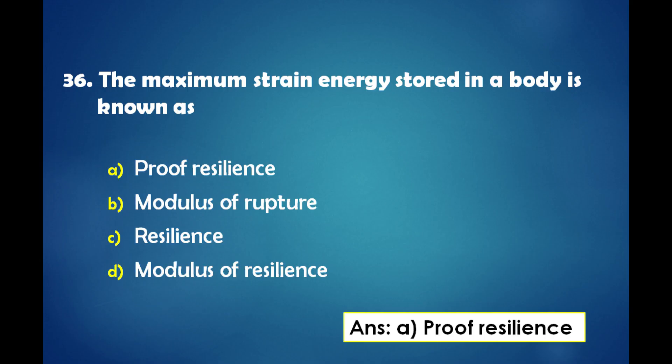The maximum strain energy stored in a body is known as: a) proof of resilience, b) modulus of rupture, c) resilience, d) modulus of resilience. The answer is: the maximum strain energy stored in a body is known as proof resilience.